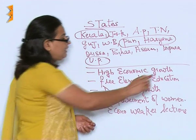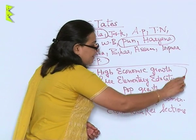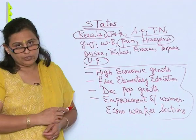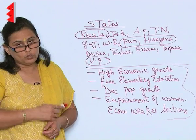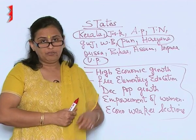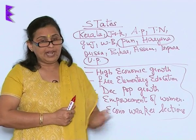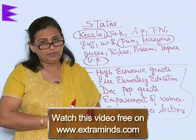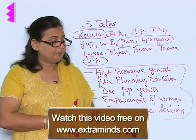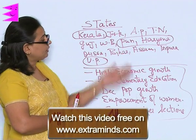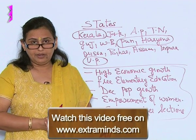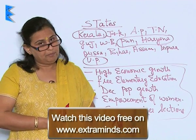These are the various factors which the government has to see so that in the next 10 to 15 years we are able to eradicate poverty once for all. This was all about your chapter on poverty.